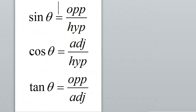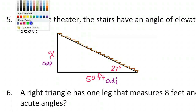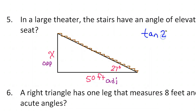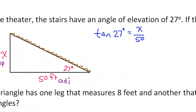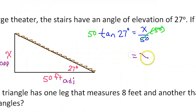Opposite over adjacent — which function is that? Tangent is opposite over adjacent. So we will use the tangent function. The tangent of 27 degrees is equal to opposite over adjacent, so that's x over 50. To solve this, we simply multiply both sides by 50 — those 50s cancel out — so x is just 50 times tangent 27.